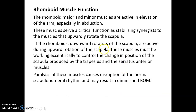Regarding rhomboid muscle function, the rhomboid major and minor muscles are active in elevation of the arm, especially in abduction. These muscles serve a critical function as stabilizing synergists to the muscles that upwardly rotate the scapula — they are the stabilizing muscles for upward rotation of the scapula.